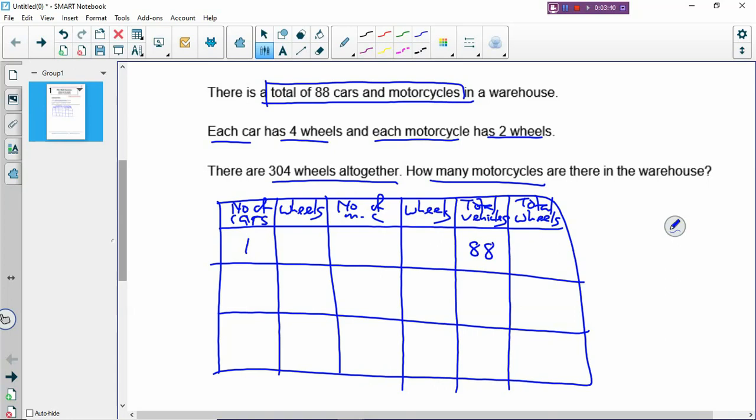One car. If there's one car then there will be 87 motorcycles. One car has four wheels. 87 motorcycles will be 87 times 2. There will be 174 wheels. And add together will be 178 wheels altogether. So that's your first row.